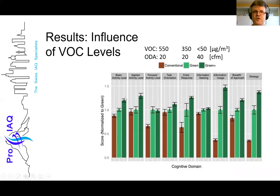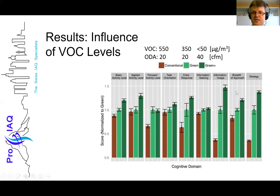Looking at the influence of VOC levels on cognitive output: we have a conventional building at 550 micrograms per cubic meter VOC, with the government-mandated limit being 2000. A green building is at 350, and a green-plus building is below 50. Looking at the function scores, basic activity level and especially information usage improve in the green-plus building — where the VOC is lower, the function score is better. Brain output gets much better if the air quality is better.